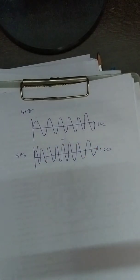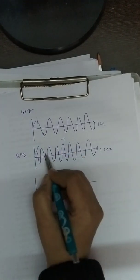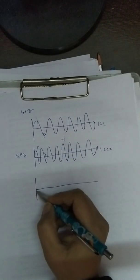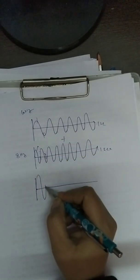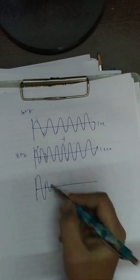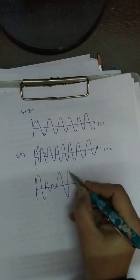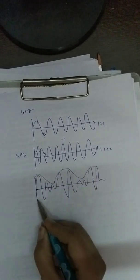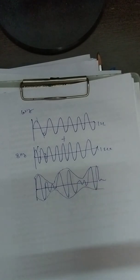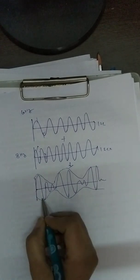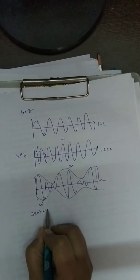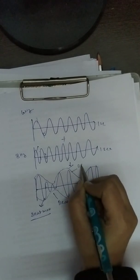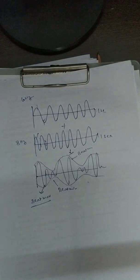When these two waves get superimposed: when crest falls on crest, the amplitude increases. When trough falls on crest, the resultant amplitude decreases. So in the resultant wave formed after superposition, where crest falls on crest, amplitude increases; where trough falls on crest, it decreases. At some points the amplitude of the sound increases — this is called beat maximum. At other points the amplitude decreases — this is beat minimum.